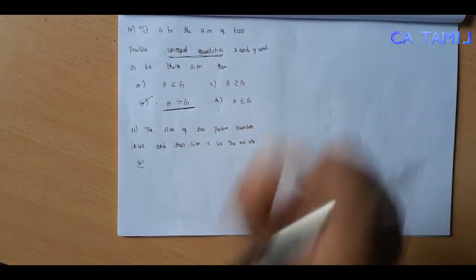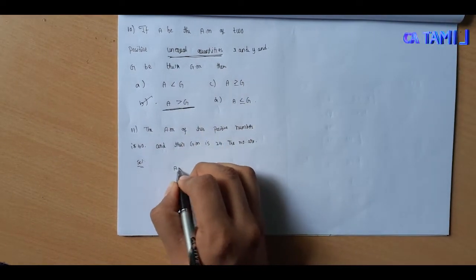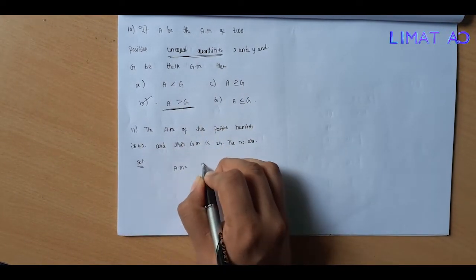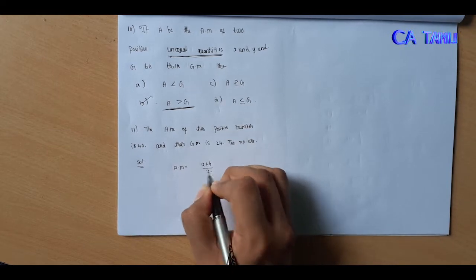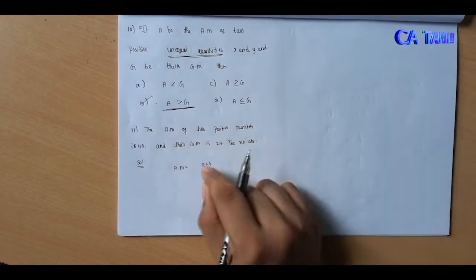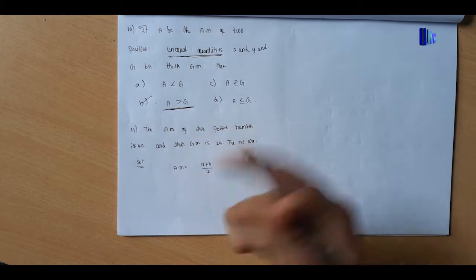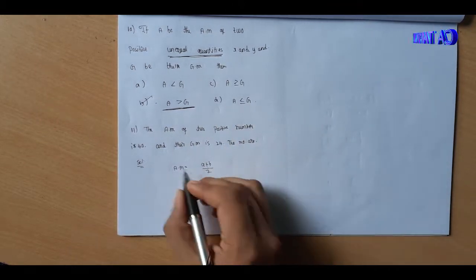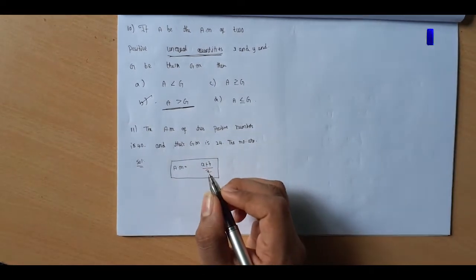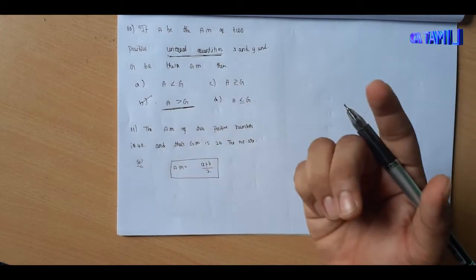What is the property? The AM property is A plus B divided by 2. So A plus B divided by 2 equals 40.